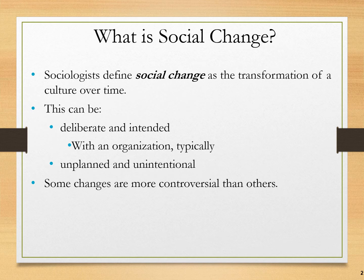Sociologists define social change as the transformation of a culture over time. This can be either intended and deliberate, which usually involves an organization and is often political, or social change can be unplanned and unintended. Some social changes are more controversial than others, and those controversial ones usually involve politics in one way or another.